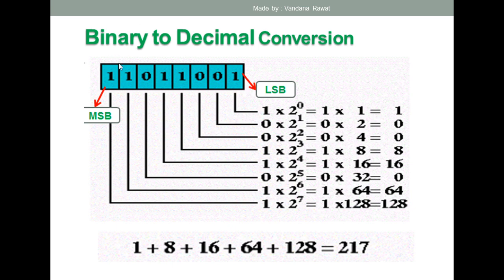Just like that, if we have a binary number and want to convert it into decimal, we multiply each digit by the exponents of 2. We always start from the LSB side — the rightmost digit. For example: 1 × 2⁰, then 0 × 2¹, 0 × 2², 1 × 2³, 1 × 2⁴, 0 × 2⁵, 1 × 2⁶, and 1 × 2⁷. We then take the summation of all these values, and that gives our decimal result.